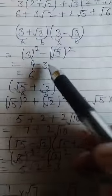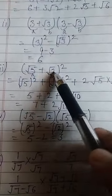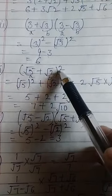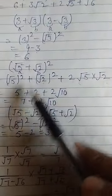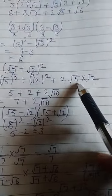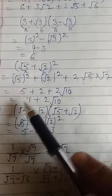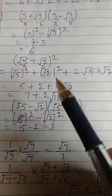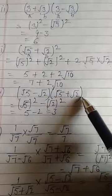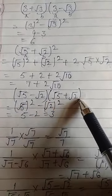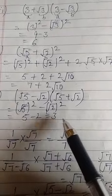So (3+√3)(3−√3) = 3² − (√3)² = 9 − 3 = 6. Next: (√5 + √2)² = a²+b²+2ab, where a=√5 and b=√2. This gives (√5)² + (√2)² + 2×√5×√2 = 5 + 2 + 2√10 = 7 + 2√10. Then (√5 − √2)(√5 + √2) = (a−b)(a+b) = a²−b² = (√5)²−(√2)² = 5−2 = 3.